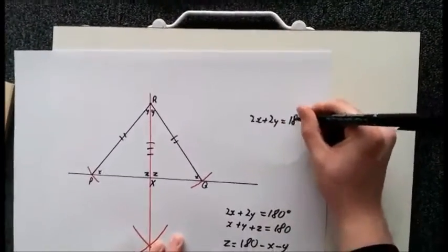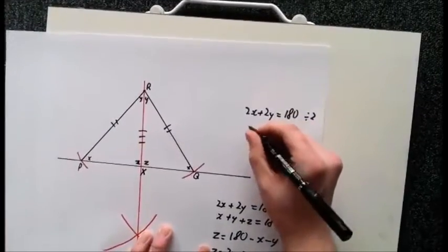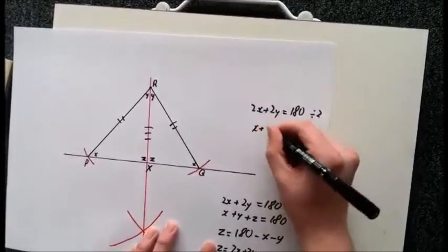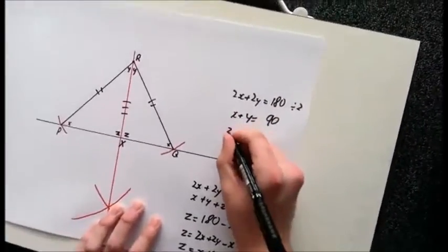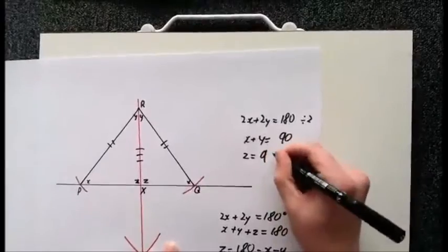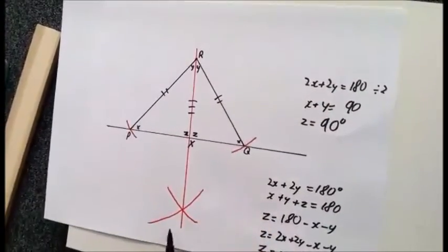180 degrees. If we divide that by 2, we get X + Y = 90 degrees. Since we're looking for Z and Z = X + Y, then Z = 90 degrees. This proves that the line RX is perpendicular to the baseline. Thank you.